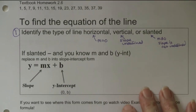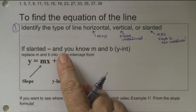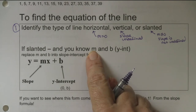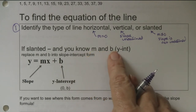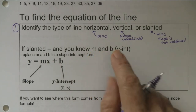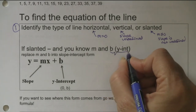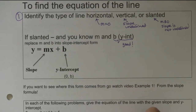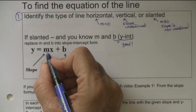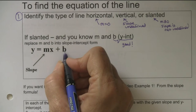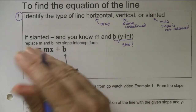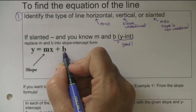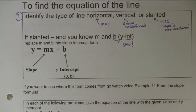We're going to be focusing right now on slanted lines. If it's a slanted line, you'll know the slope. If you also know the y-intercept - this is something you may not always know - it makes it really easy. All you have to do is substitute into this equation builder: y = mx + b. M is the slope and B is the y-intercept. X and Y stand for all of the infinitely many points on the line, so you're just filling in for M and B.